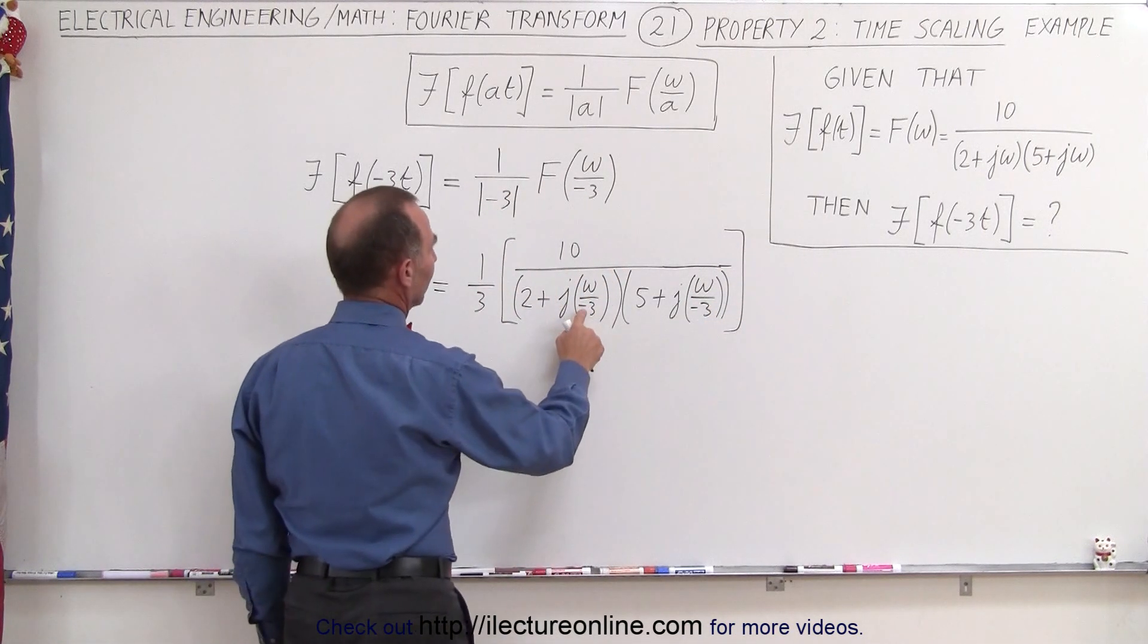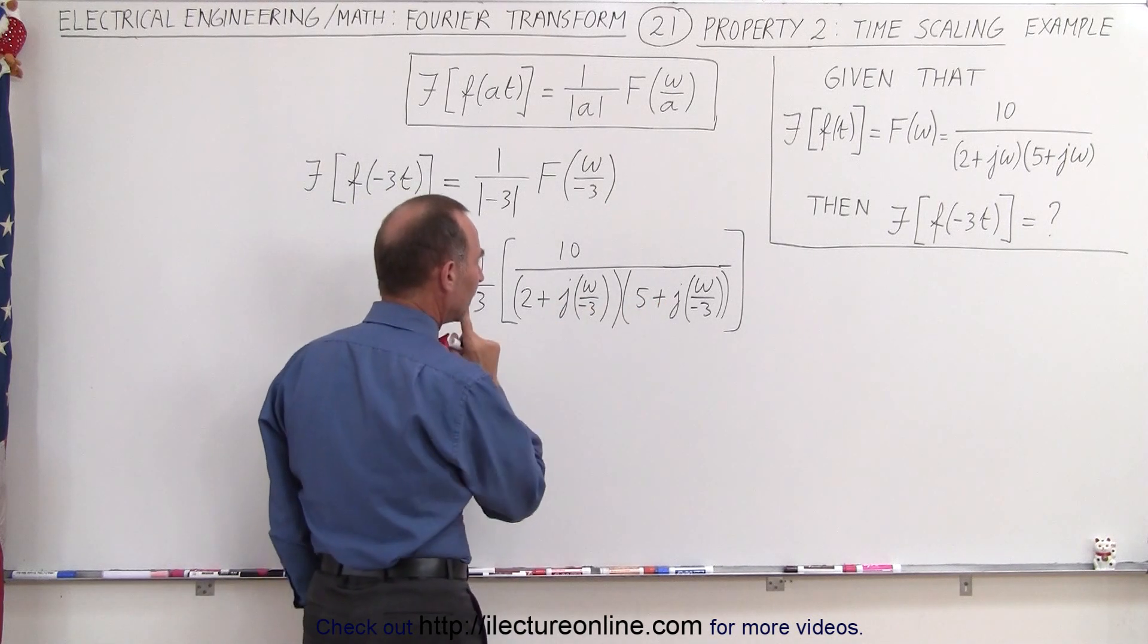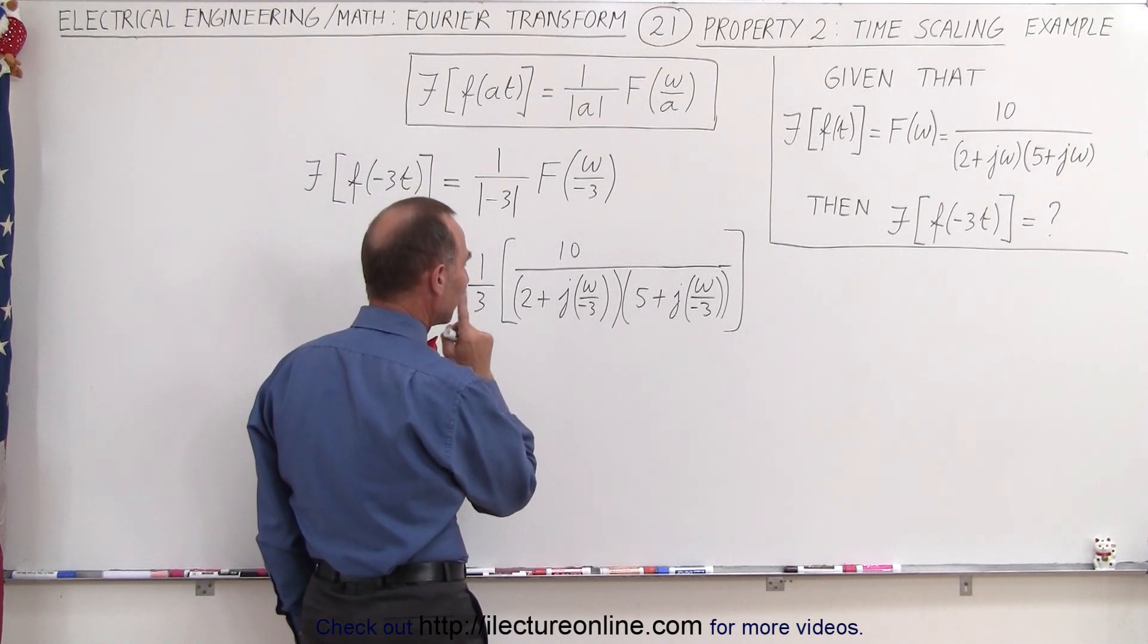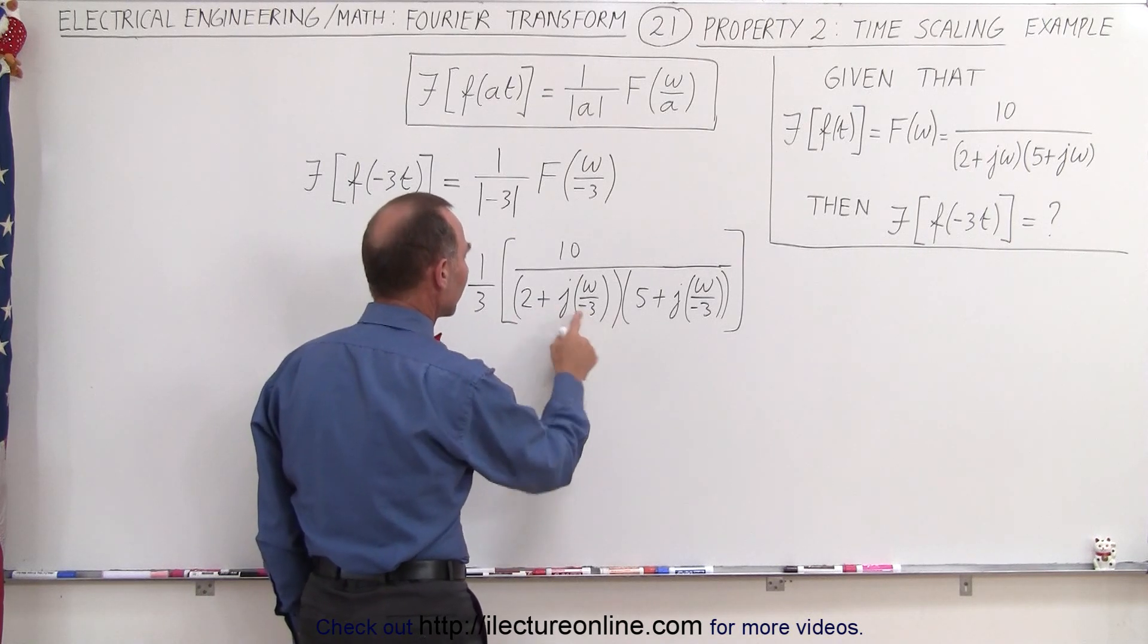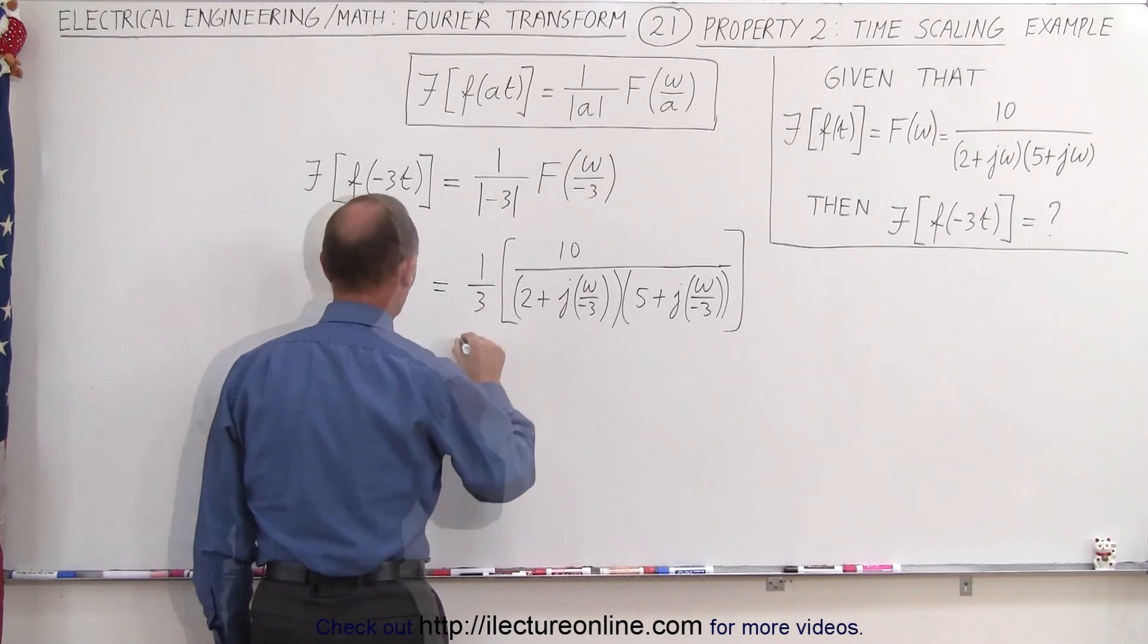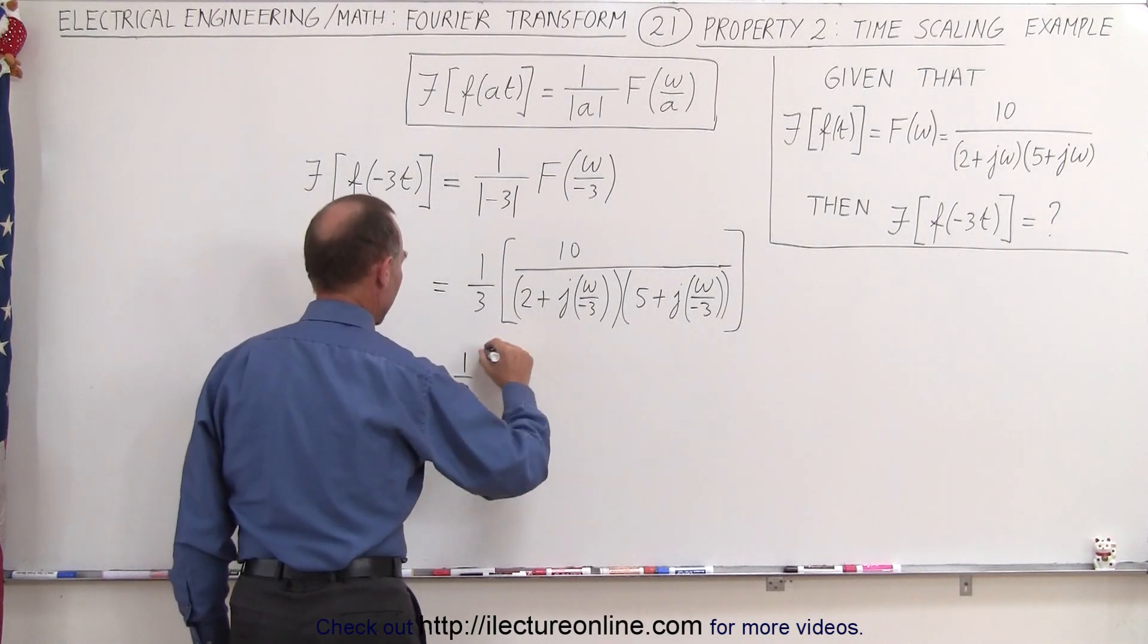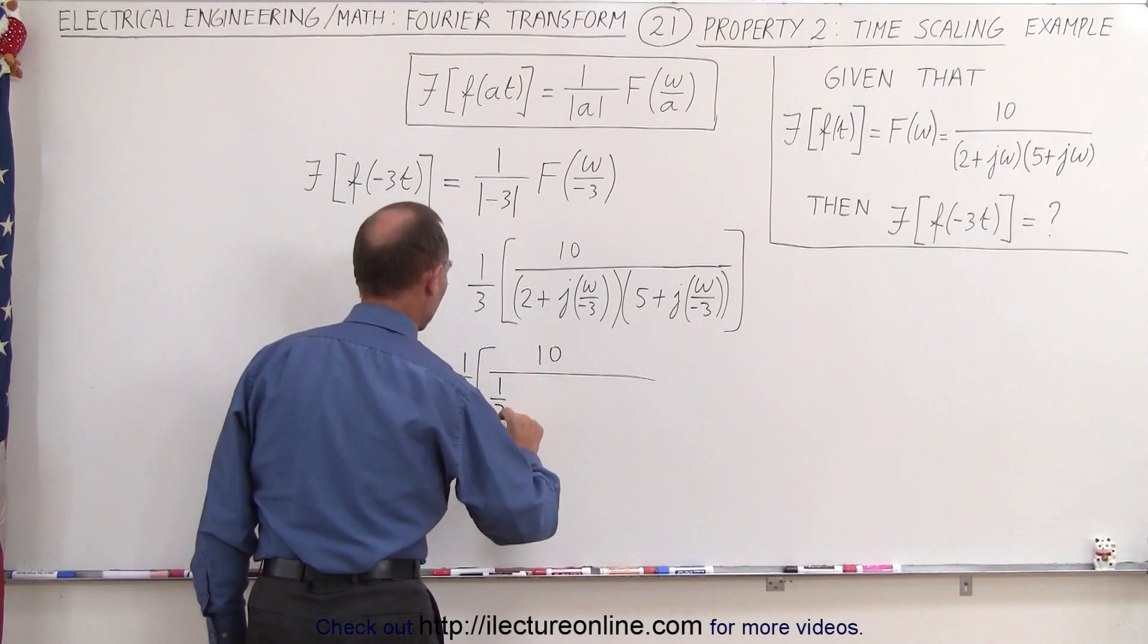So first of all this negative can come out here and make that a negative as well and then we can factor out a 3 out of each one of those. So this becomes equal to 1 over 3 times 10 divided by 1 over 3 times.